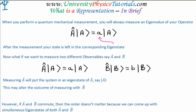Position and momentum do not commute, and that means we can't come up with simultaneous eigenstates of them, and that means that measuring with momentum will give you a different value when measuring position, and vice versa.